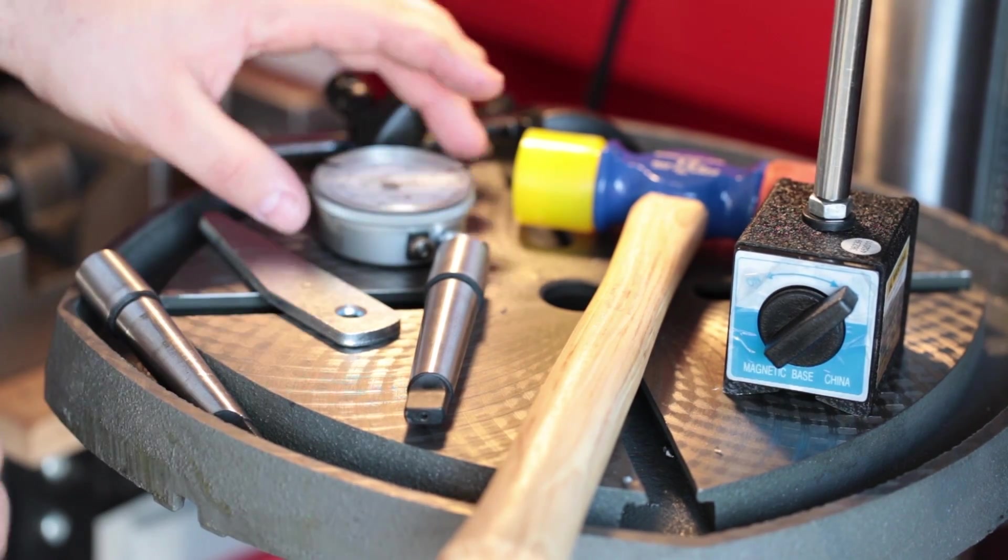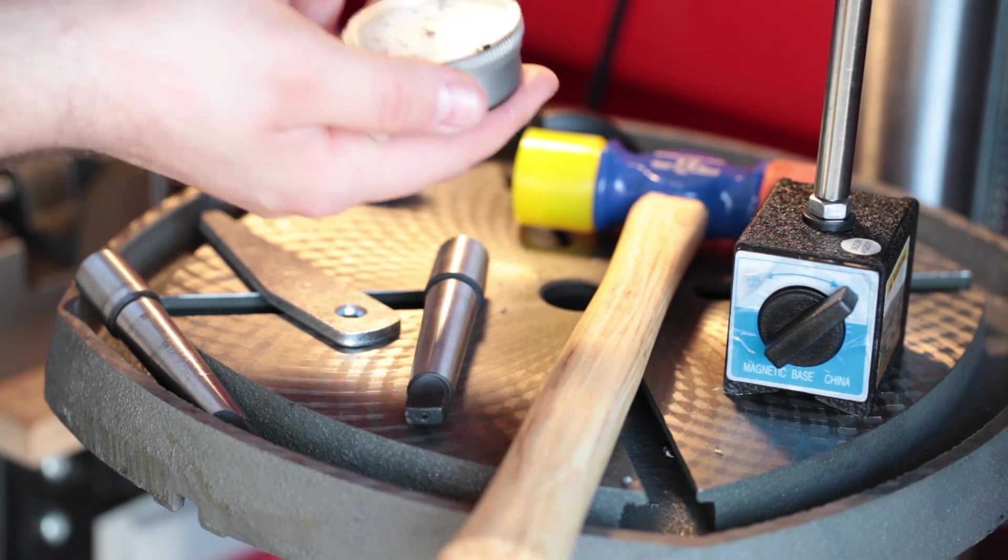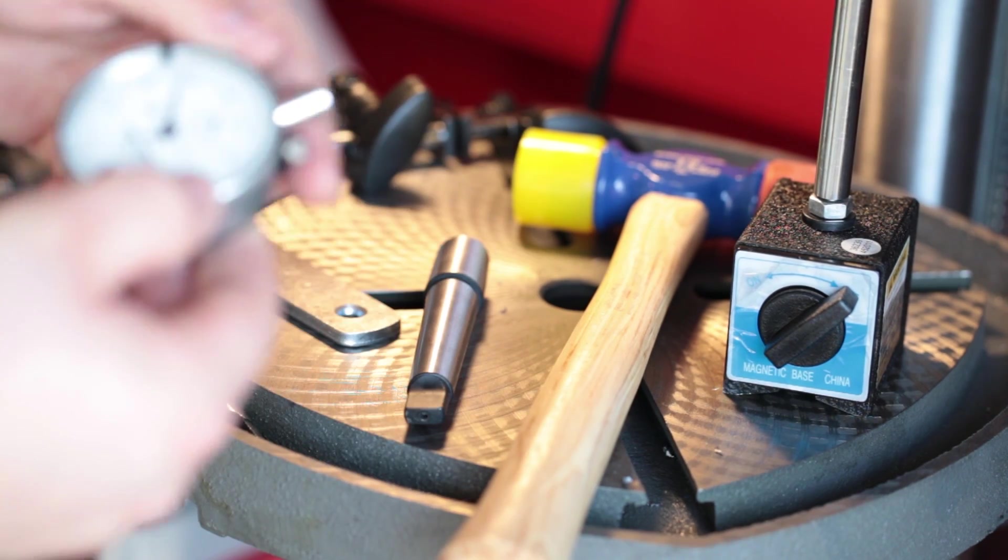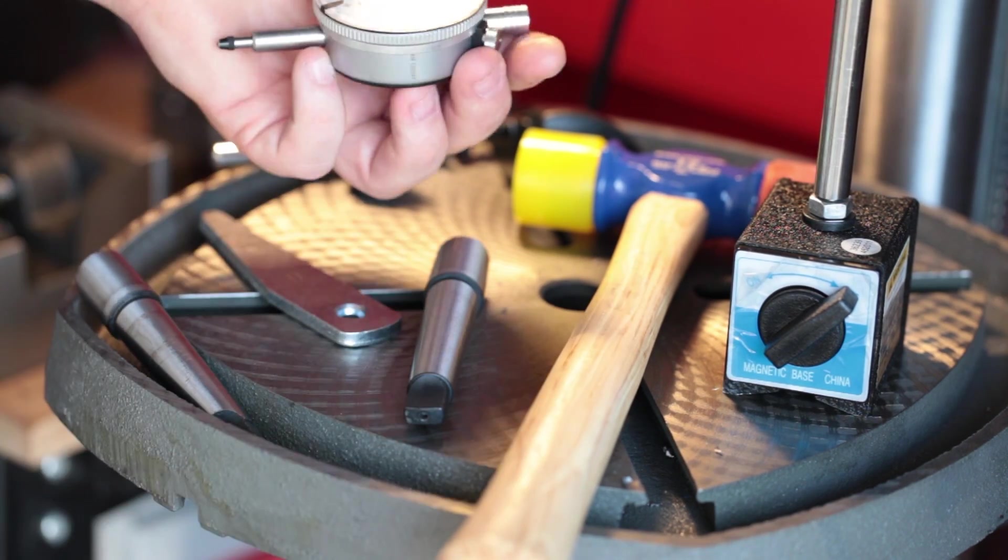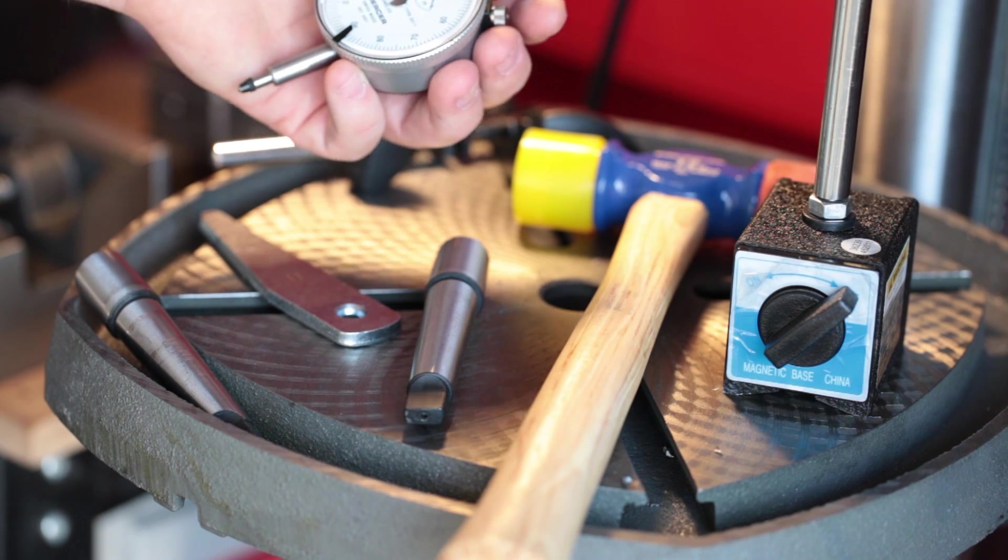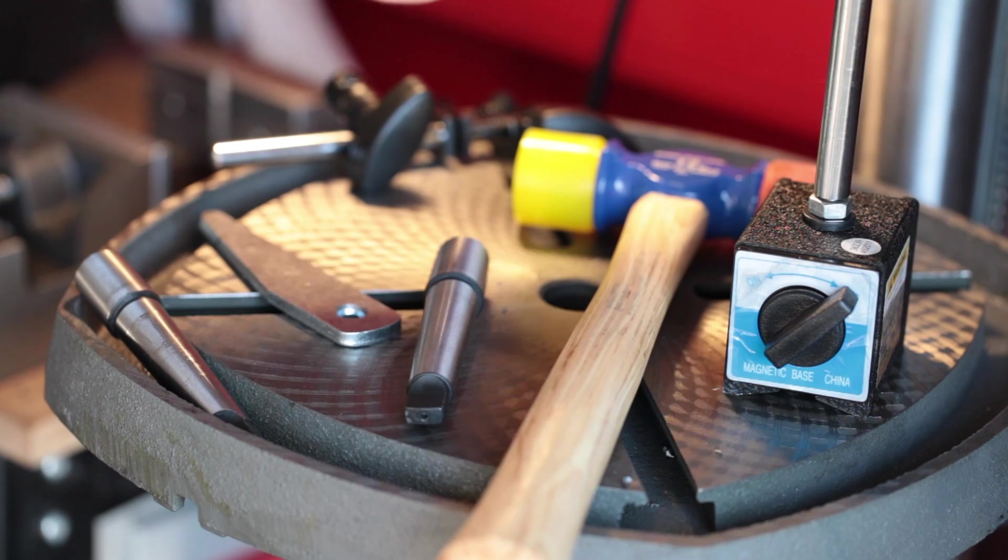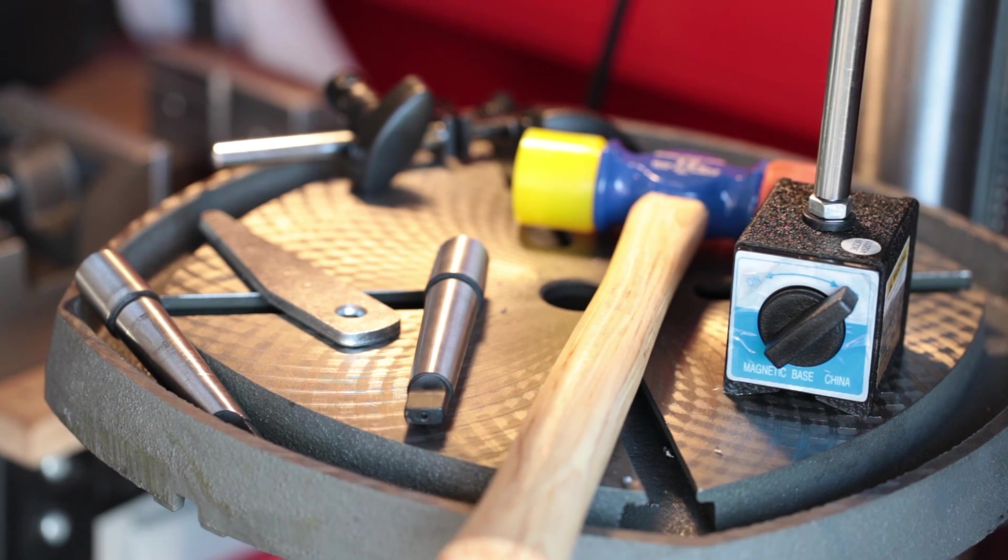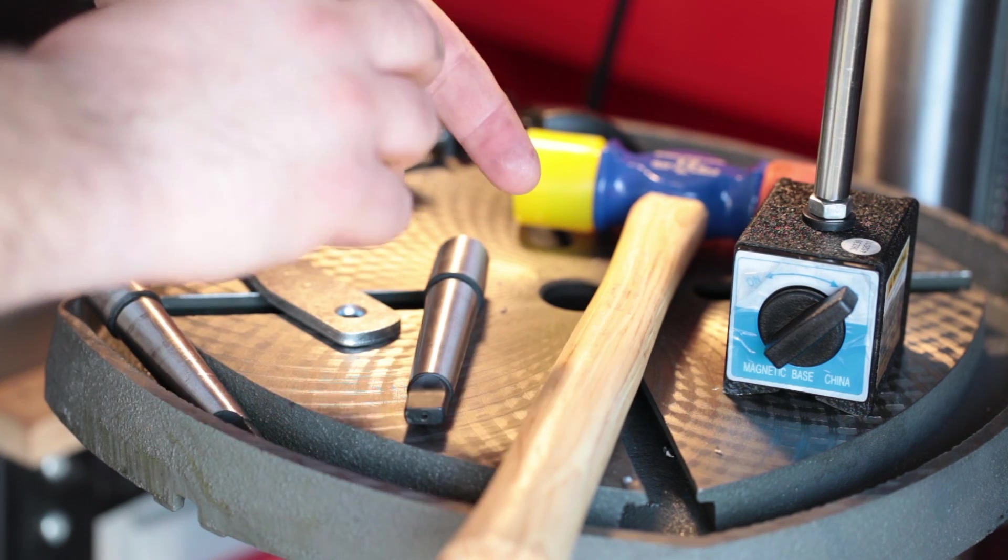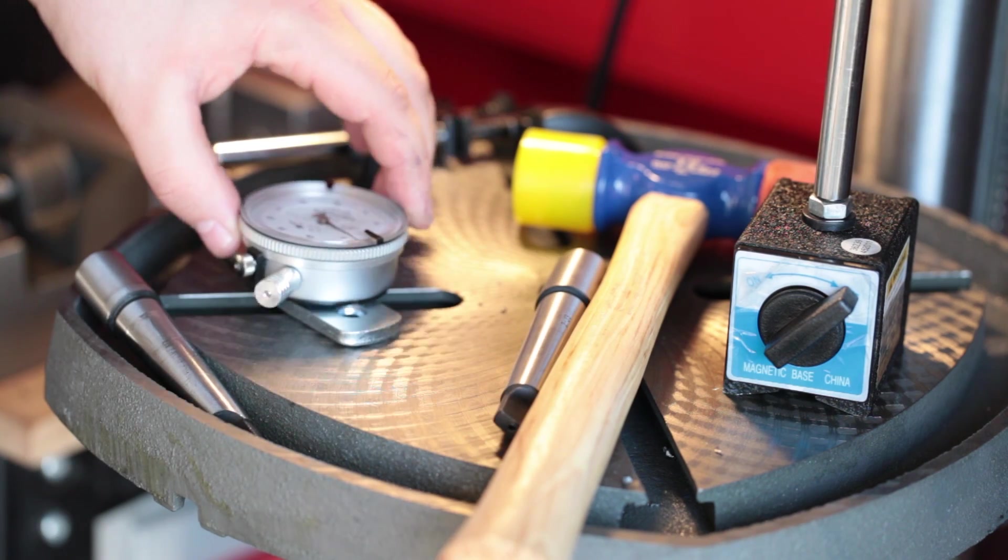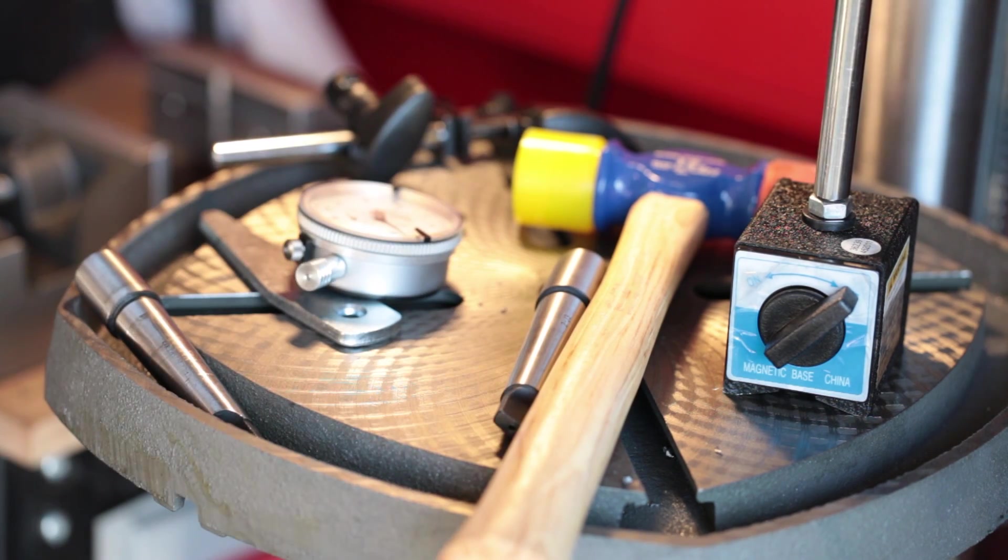I'm going to set up my dial indicator here to read against the shaft and rotate the shaft by hand. This dial indicator is a Mercer Brown and Sharp unit. It reads in tenths of thousands, so 0.0001 inches per increment. So when you see this moving, keep that in mind.